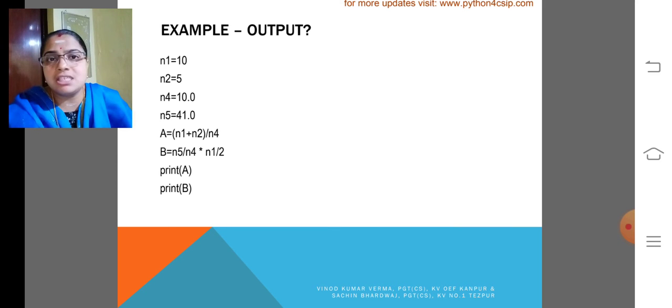That is, without saying the answer or without knowing the answer, we can easily predict by getting the type of N1, N2, N3, N4 and N5. It is very easy. The type of A and the type of B become float only.